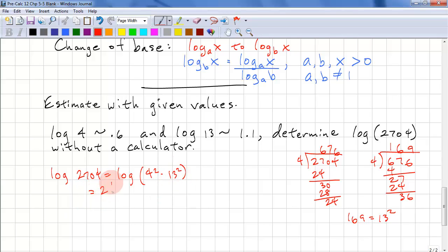This equals 2 log 4 plus 2 log 13. Finally, we can substitute in our given values. Log 4 is 0.6, so we have 2 times 0.6. And we add that to 2 times log 13, which is 1.1. This is 1.2 plus 2.2. And that's simply 3.4. And I should correctly put in approximately signs. And that completes this lesson.